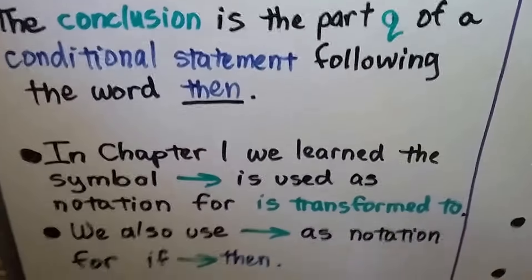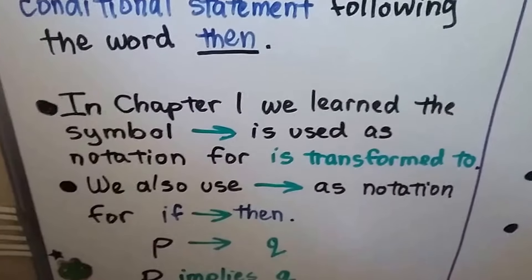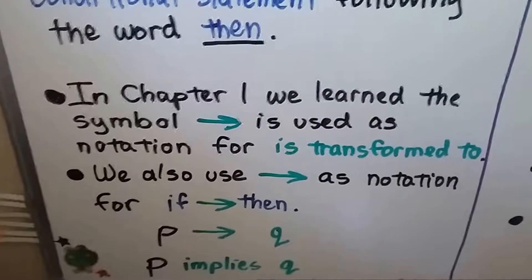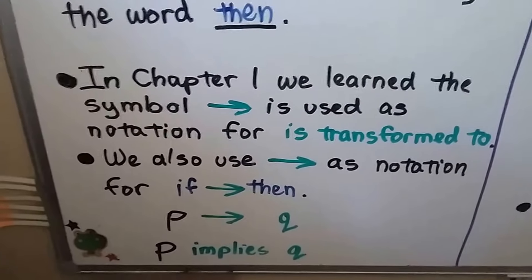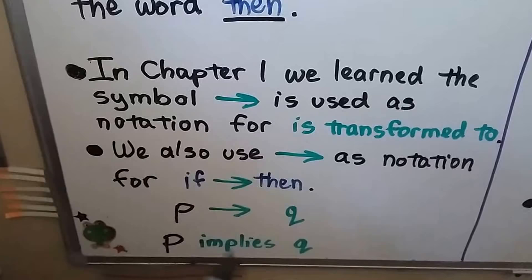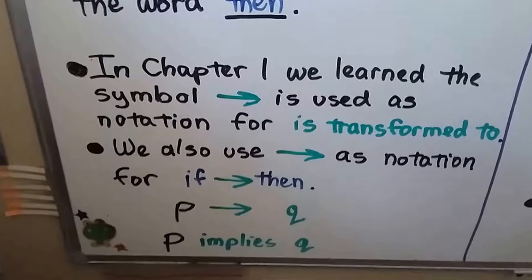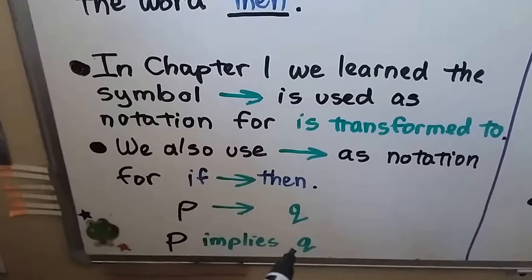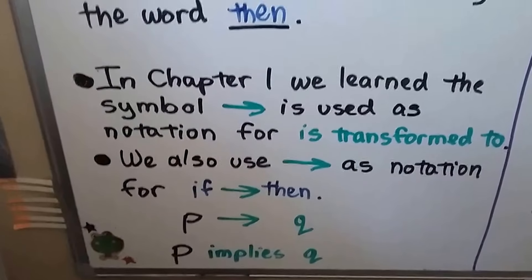In chapter 1, we learned this symbol — this arrow going to the right — is used as notation for 'is transformed to.' We also use that right arrow as notation for if-then. If p, then q. We can also say p implies q. We can use the arrow as the word implies.